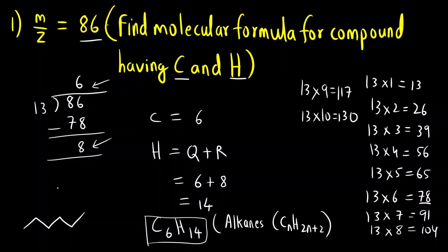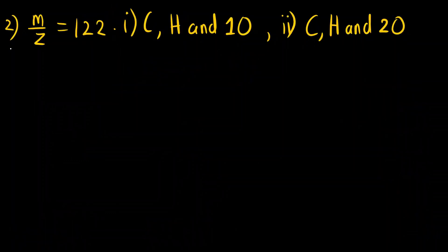I am just giving you the structure so that you can cross-check whether the molecular formula is correct. You can see it is CH3-CH2-CH2-CH2-CH2-CH2-CH3. You can count there are 6 carbons and 14 hydrogens. So this was the first question.